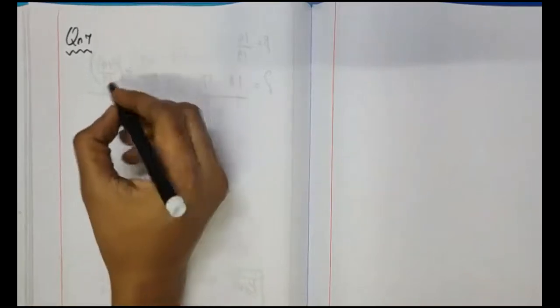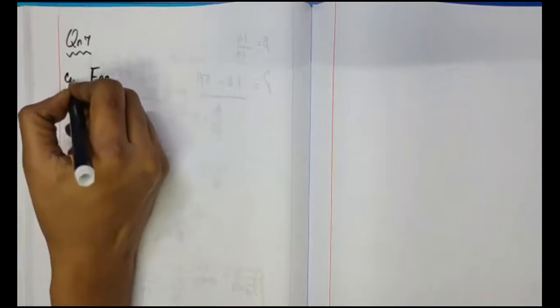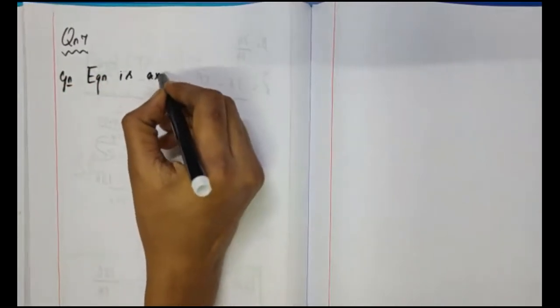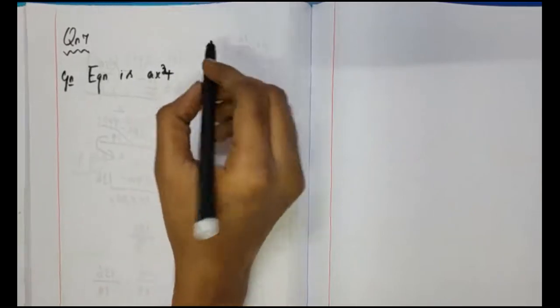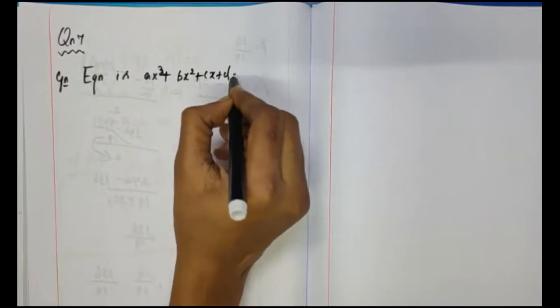For question number 7, the given equation is ax³ + bx² + cx + d equal to 0.